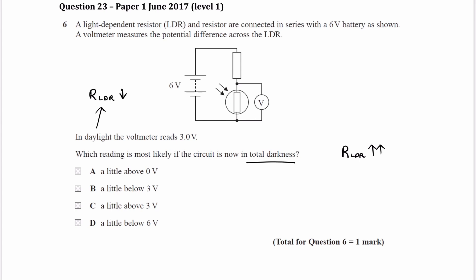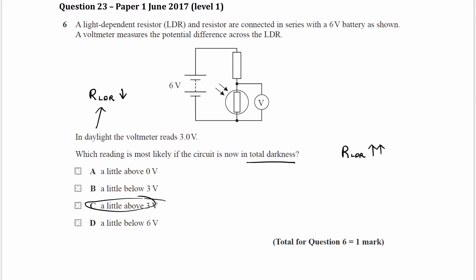So how do we apply that? How do we figure out how that affects the voltage? Well, as we know, voltage for resistors in series splits in the same ratio as resistance. If the resistance of the LDR goes up, then it will get more voltage. So if it was 3 volts to begin with, it's going to be more than 3 volts.